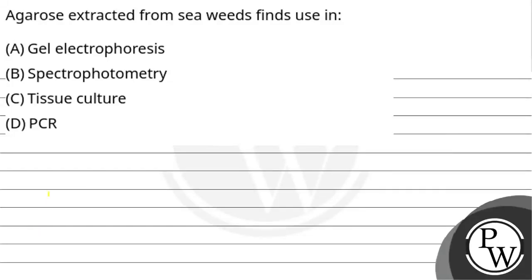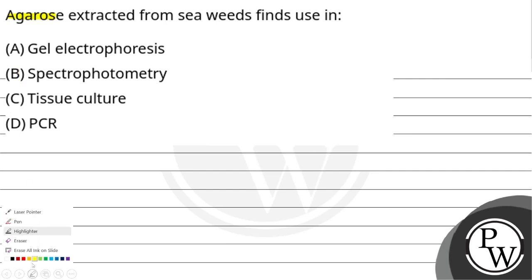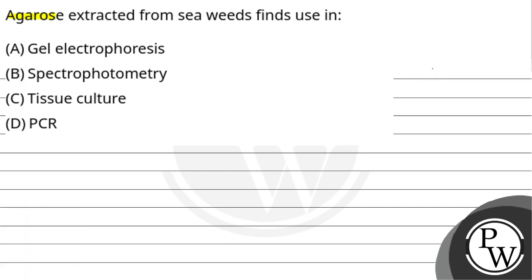Hello guys, let's see the question. Agarose extracted from seaweeds finds using: option A gel electrophoresis, option B spectrophotometry, option C tissue culture, and option D PCR.